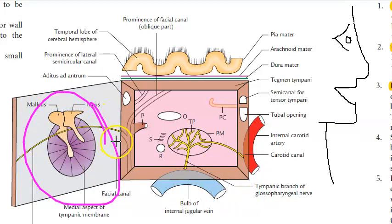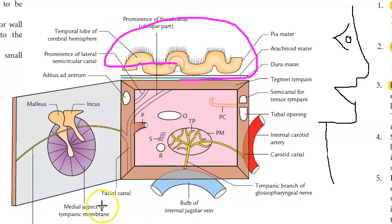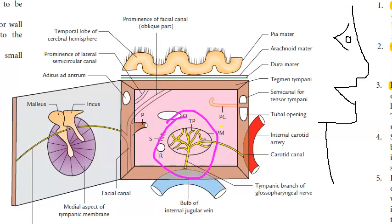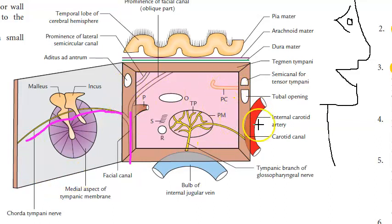Here you have the eardrum — they have kind of opened it and kept it here, so you are looking at the middle ear cavity. Here they are showing the tympanic plexus (TP). Here you have the oval window, here you have the round window, and here you have the facial canal. They have shown the chorda tympani nerve going on the tympanic membrane. You can also see the internal carotid artery and internal jugular vein.